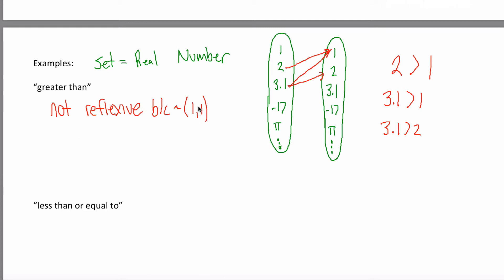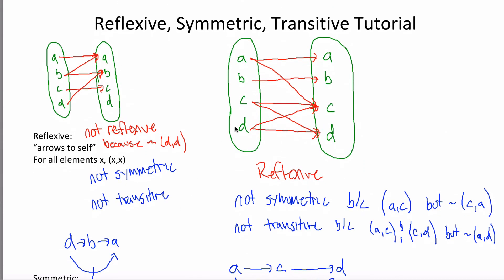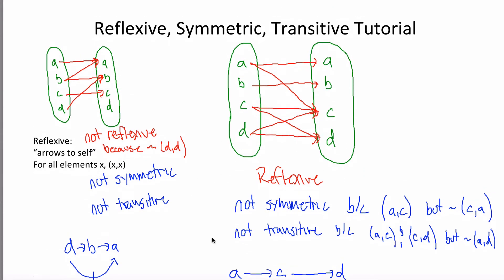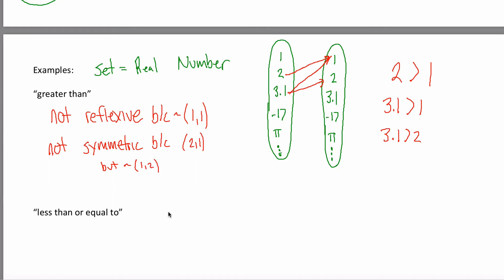What about symmetric? That's the 'arrows back' thing — if there's an arrow from A to C, there must be an arrow from C back to A. I have an arrow from 2 to 1, so there must be an arrow from 1 to 2. Is there? Would it be a true statement if I wrote '1 is greater than 2'? No — if 2 is greater than 1, then 1 can't possibly be greater than 2. This relation is not symmetric, because there is an arrow from 2 to 1, but there is not an arrow from 1 to 2.